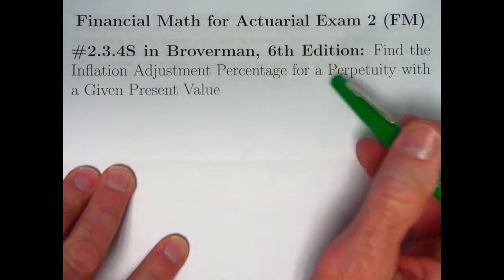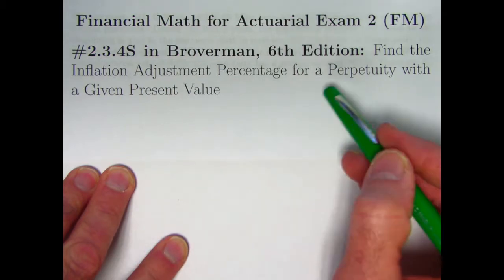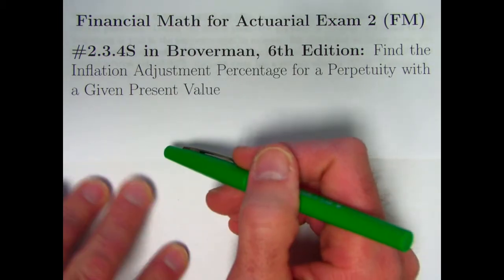It's real practical, actually. It's about finding a cost-of-living adjustment, an inflation adjustment percentage, for a perpetuity, an annuity that goes on forever, that's got a given present value.